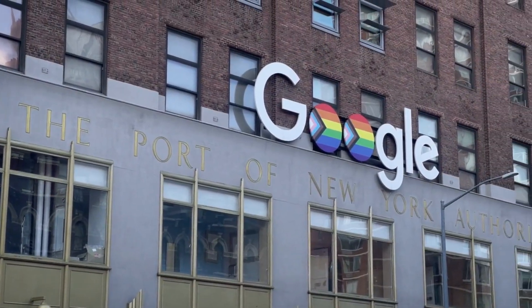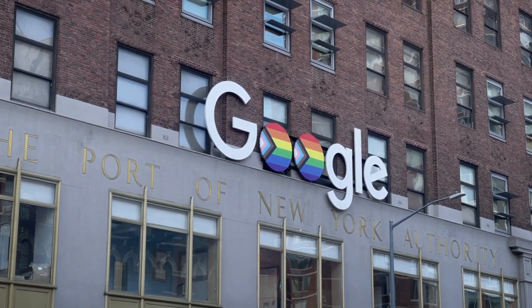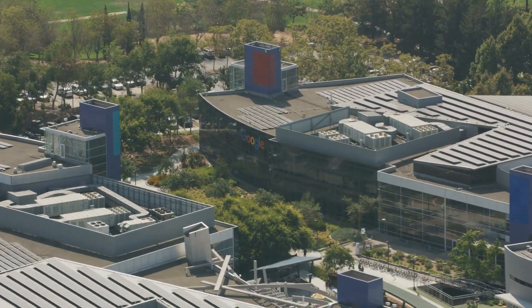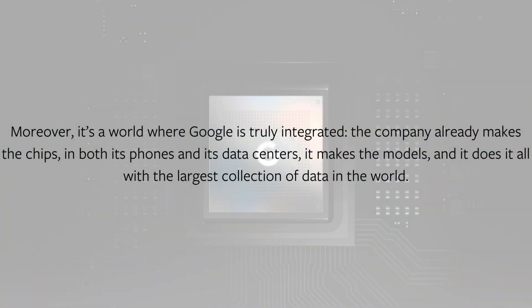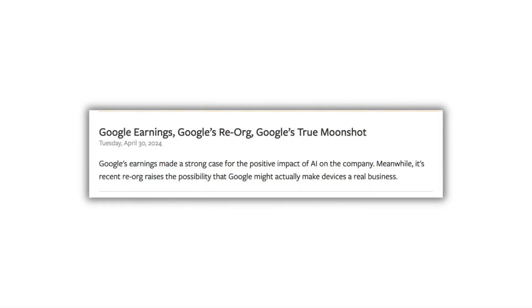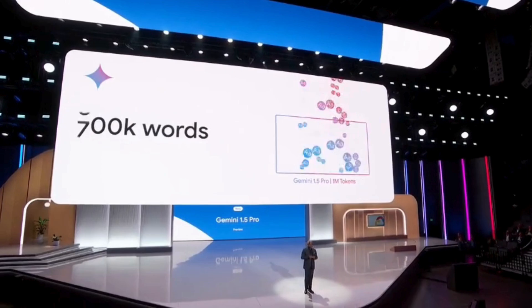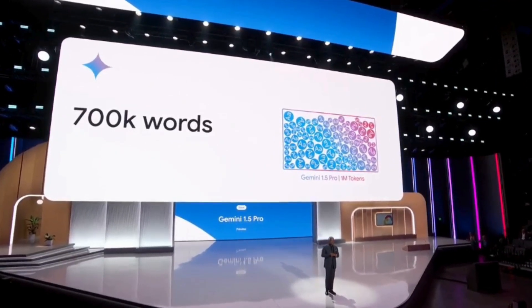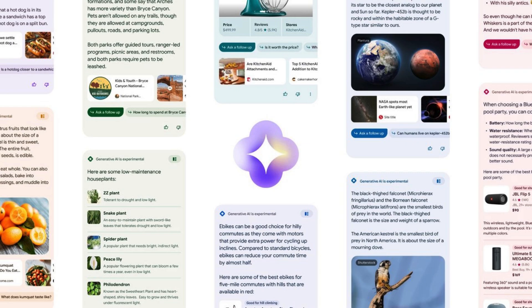The potential payoff, though, is astronomical. A world with Pixie everywhere means a world where Google makes real money from selling hardware, in addition to services for enterprises and schools, and cloud services that leverage Google's infrastructure to provide the same capabilities to businesses. Moreover, it's a world where Google is truly integrated. The company already makes the chips in both its phones and its data centers. It makes the models. And it does it all with the largest collection of data in the world. As I noted in an update last month, Google's recent reorg points in this direction, although Google I/O didn't provide any hints that this shift in strategy might be coming. Instead, the big focus was a new AI-driven search experience, which has seen mixed results.